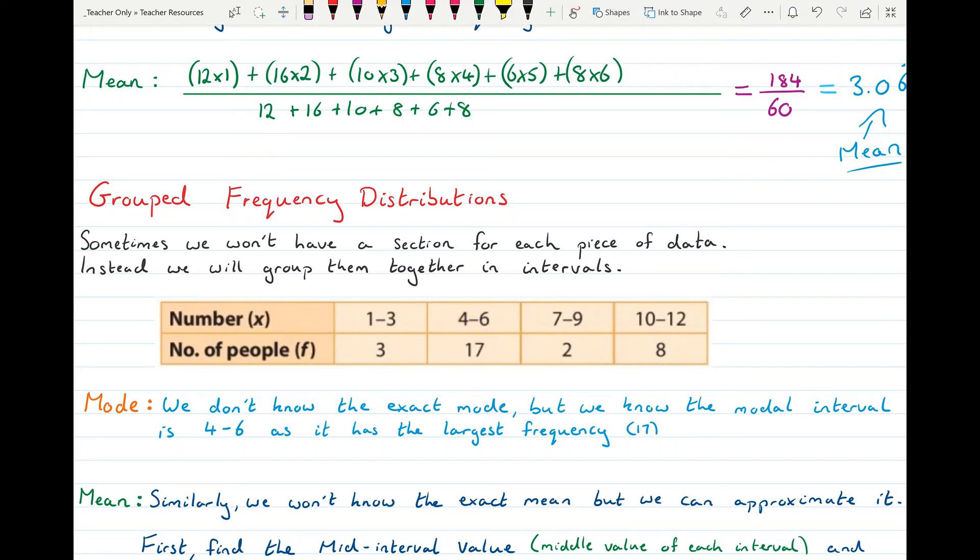And to find the mean of one of these then. Well we can't find the exact mean, but we can get an approximation of it. And in order to do that we get what's called a mid-interval value. So what number is the middle of the interval? So for our first interval here between 1 to 3, the middle value in that interval is 2.